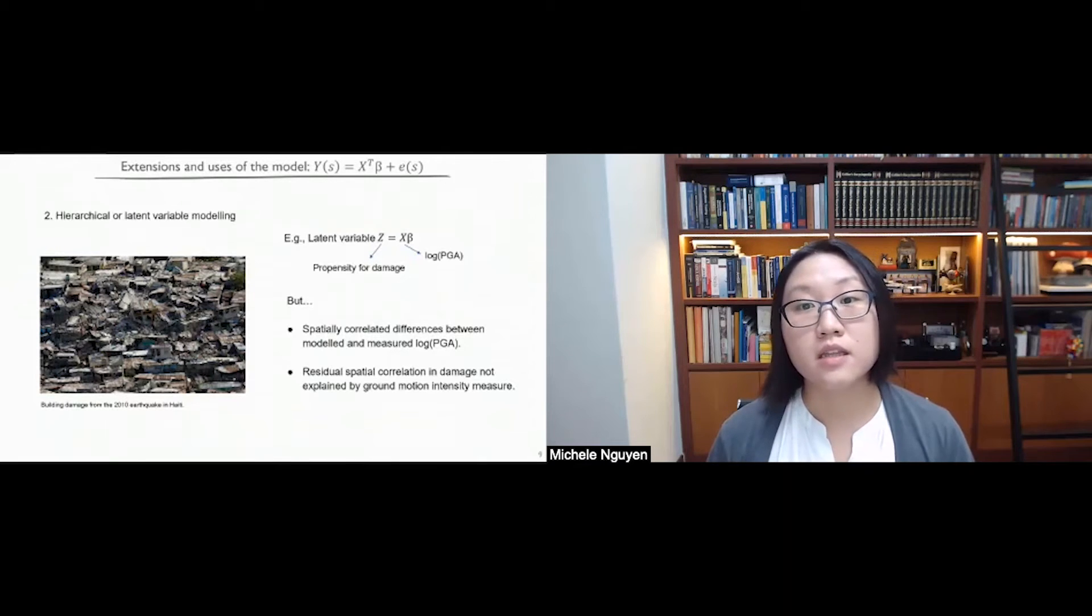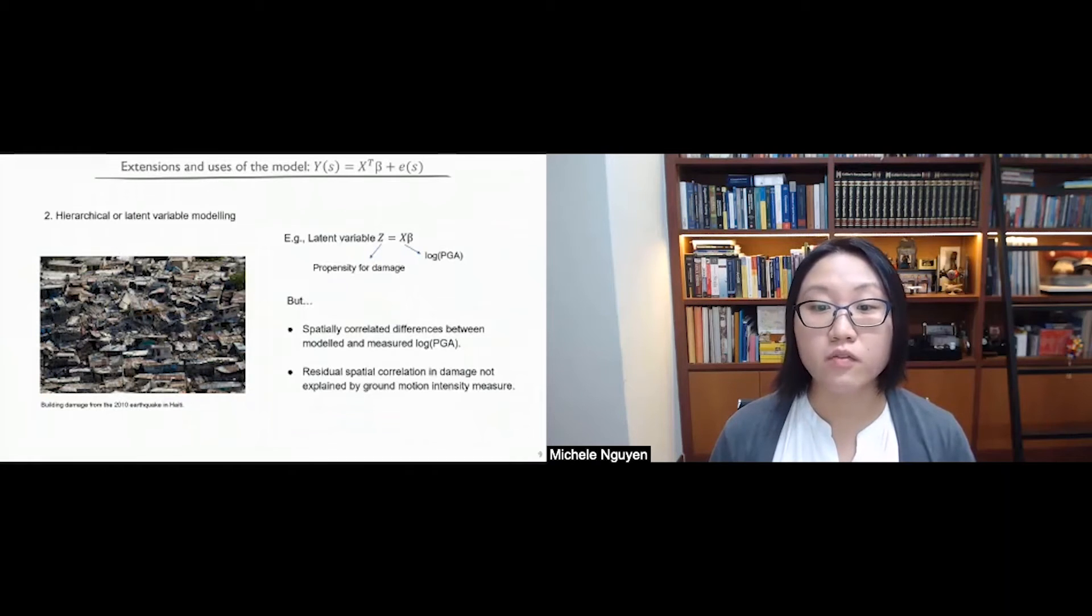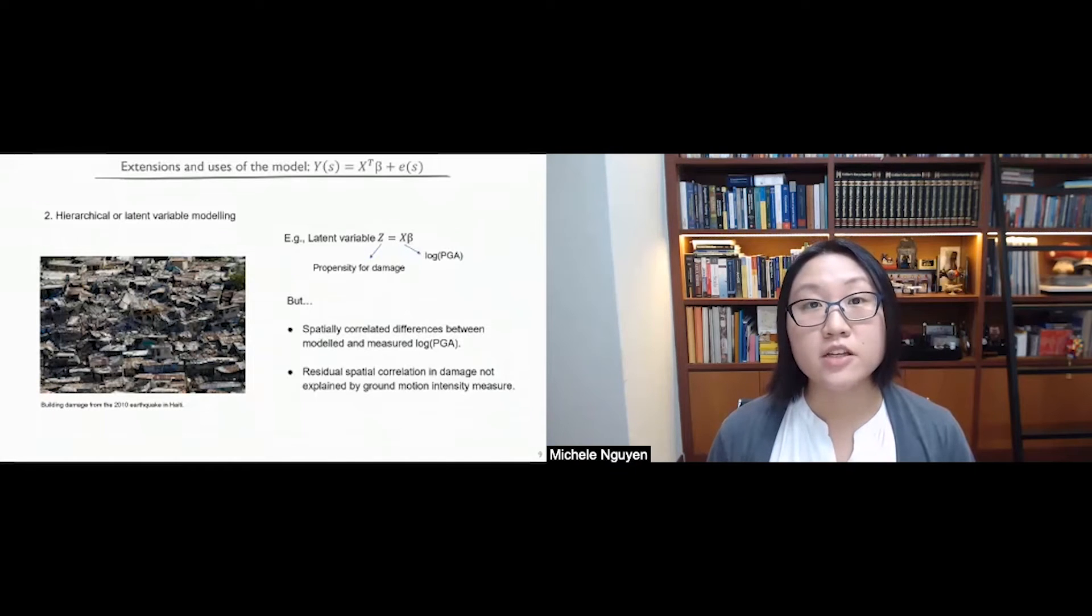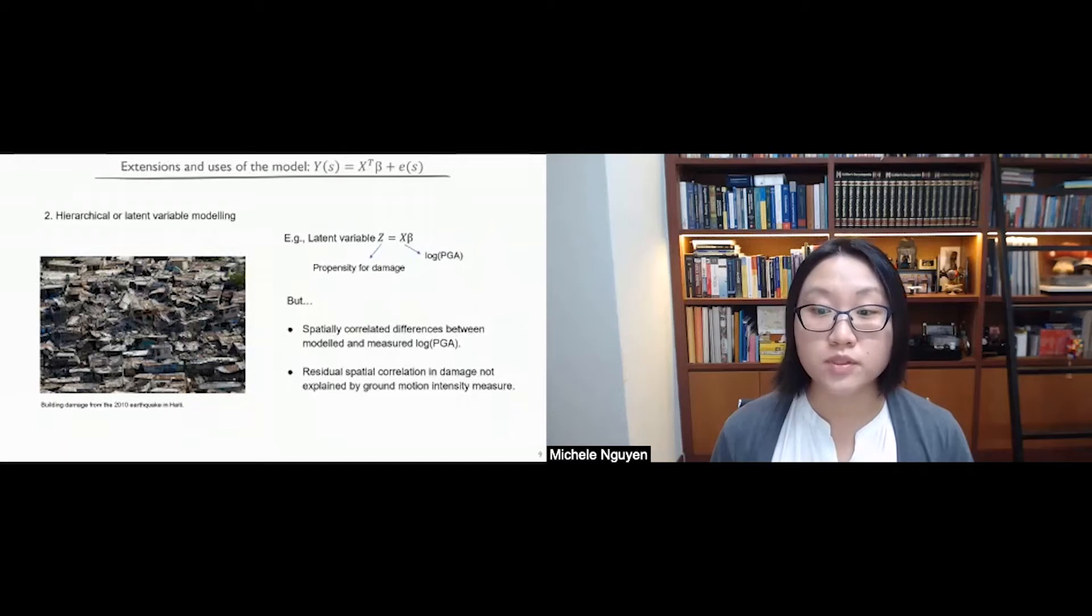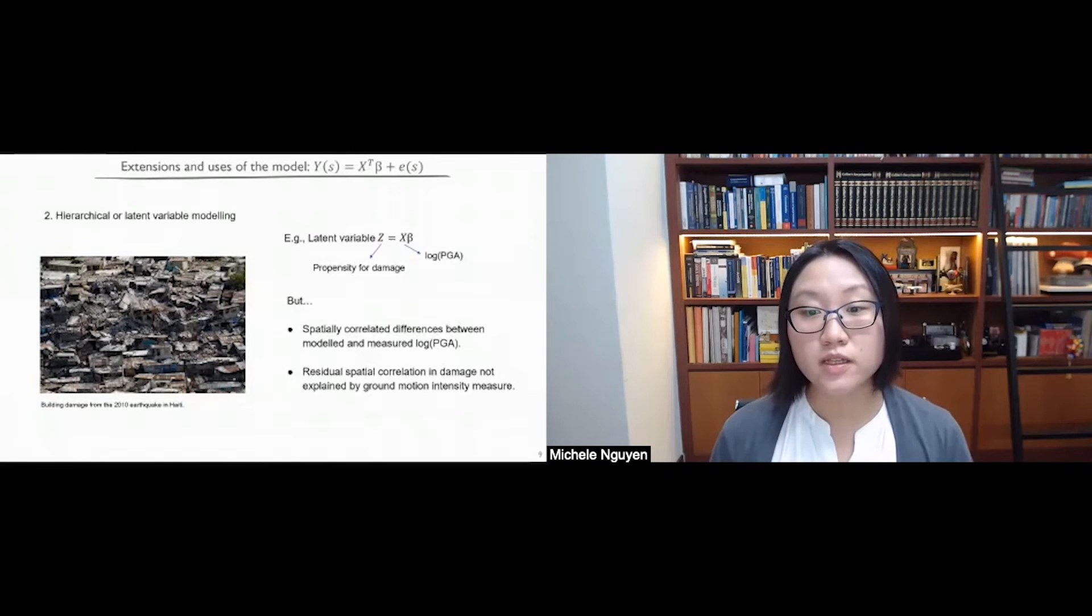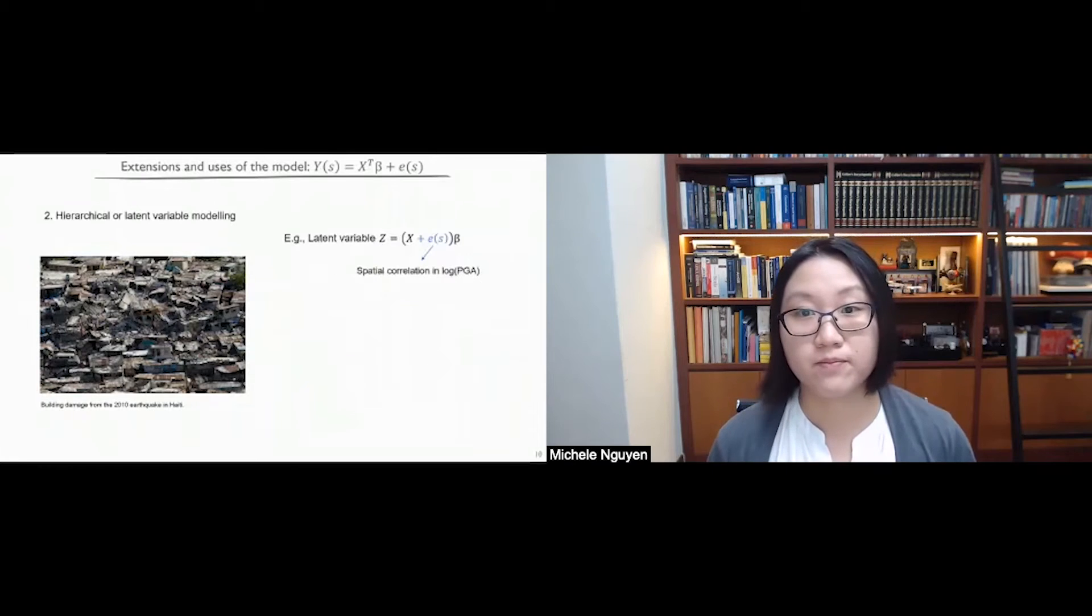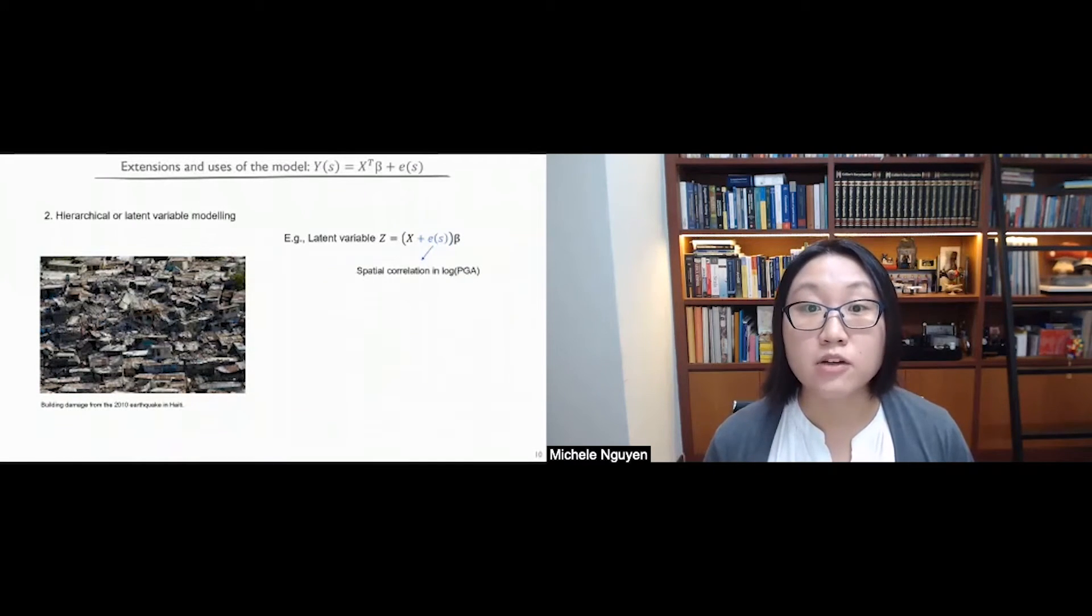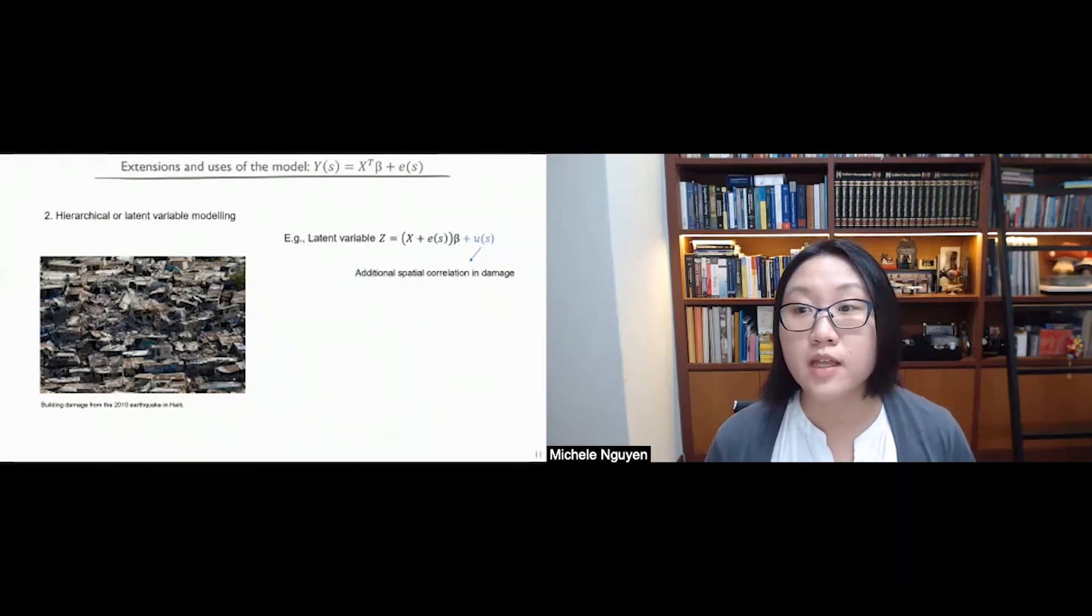However, in practice in data poor regions, this log PGA is often modeled rather than measured. And studies have shown that there are spatially correlated differences between the model and the measured log PGA. In addition, there is also a widely held but less examined view that there is additional spatial correlation in damage that is not fully attributed to the chosen ground motion intensity measure. So in this project, we are trying to model this phenomena as well as provide some evidence for it. So one way we can do this is to add Gaussian processes for the different factors of the spatial correlation to the latent variable. So for the spatial correlation in log PGA, we can add e of s over here. For the additional spatial correlation in building damage, we can add u of s.